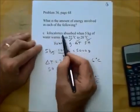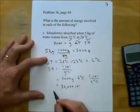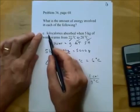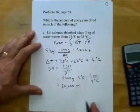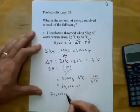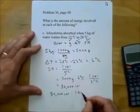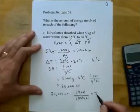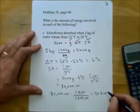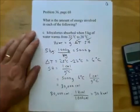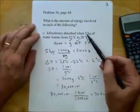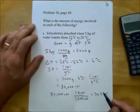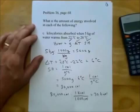We want our answer in kilocalories. Since there are 1,000 calories in a kilocalorie, we multiply: 30,000 calories times 1 kilocalorie per 1,000 calories, and that is 30 kilocalories. Checking significant figures: we have 1 and 2, so our answer should have 1 significant figure, and 30 kilocalories does have 1 significant figure since the trailing zero has no decimal place.